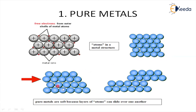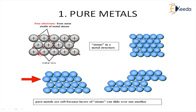If atoms are the same shape and size, automatically they can glide or slide one over another. The free electrons are ready to occupy the shells of other metals or any other object which comes through the metal.